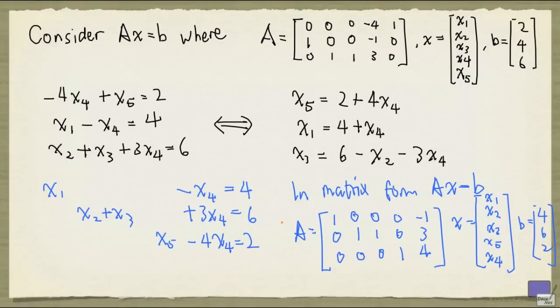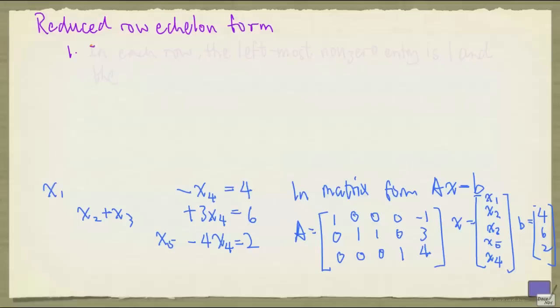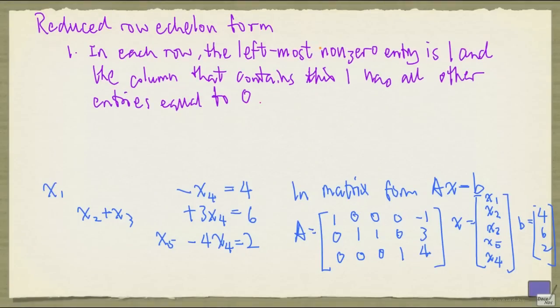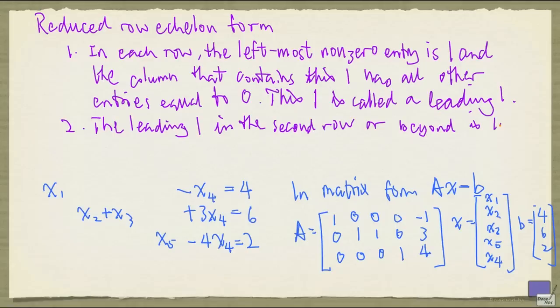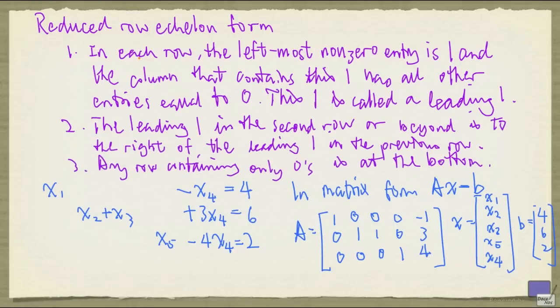A matrix having this particular form is said to be in reduced row echelon form. So let me write down the conditions here. So these are the three conditions for a matrix to be in reduced row echelon form.